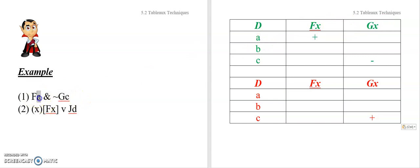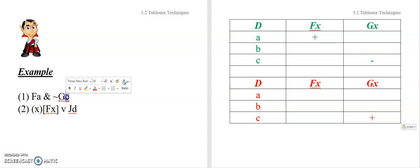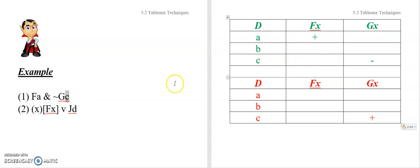So that means A has to have the property F, and C has to lack the property G. Notice I've introduced a second column to cover this. I've got my domain with three objects, and then I've got two columns for my properties. Also notice the individual constants — when you have individual constants in your sentence, you want to make sure those individual constants appear as objects in your domain. So this A represents one object and C is represented here. This is a conjunction: A has the property F, C lacks property G, and therefore this interpretation makes the whole conjunction true. It doesn't matter how you fill the rest of these in.